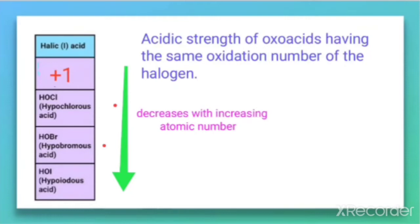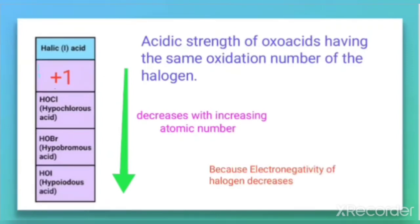When comparing hypochlorous acid, hypobromous acid, and hypoiodous acid, the acidic strength decreases down the group with increasing atomic number. This can be explained on the basis of electronegativity — the electronegativity of the halogen atom attached to oxygen decreases down the group, so the tendency to withdraw electrons from the oxygen atom decreases, and therefore the acidic character decreases.